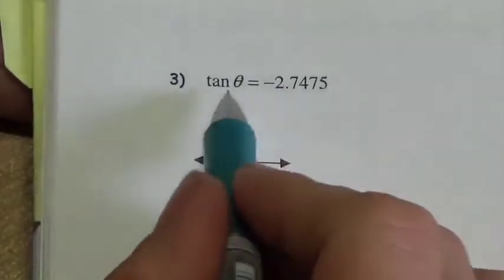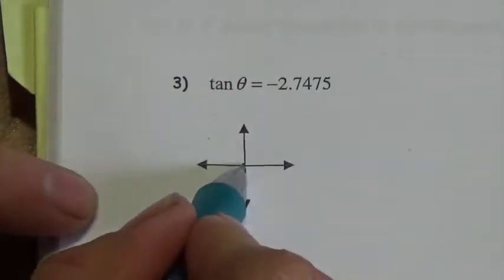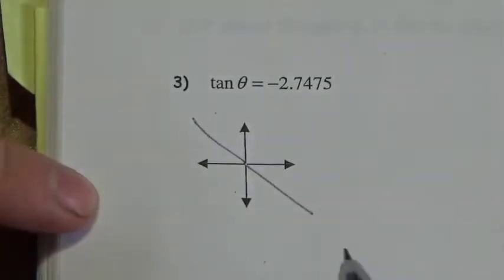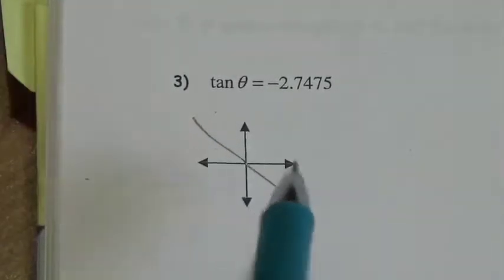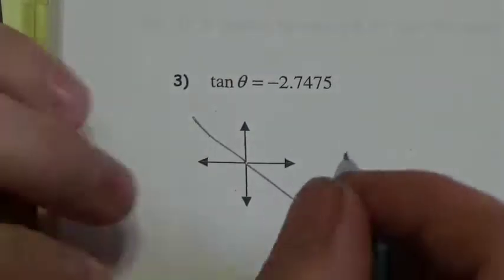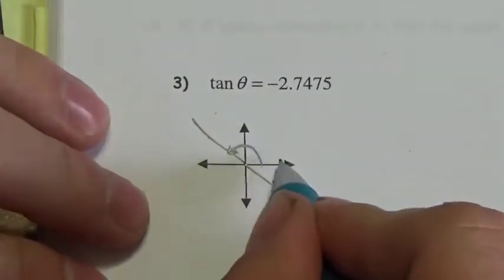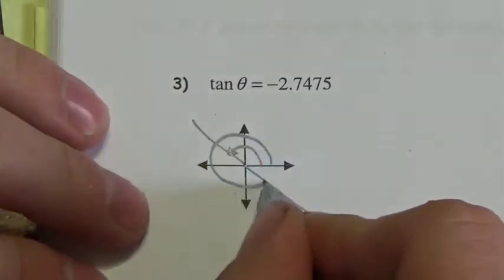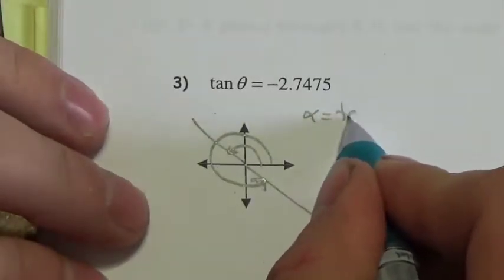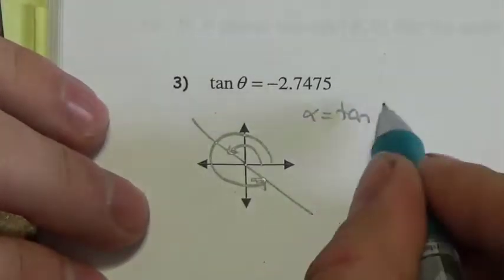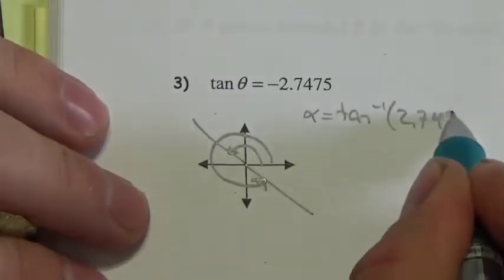Tangent is negative. Tangent is negative in quadrants 2 and 4 — where one of the sides is negative and one is positive. So I'm looking for either that angle in quadrant 2 or that angle in quadrant 4. Then I'm going to find the inverse of positive 2.7475 to get the angle inside the triangle.